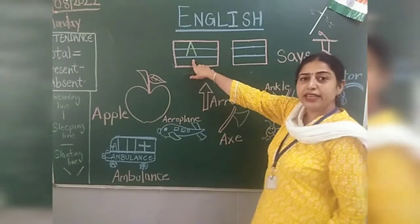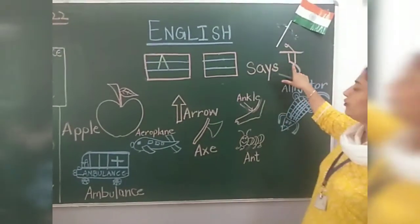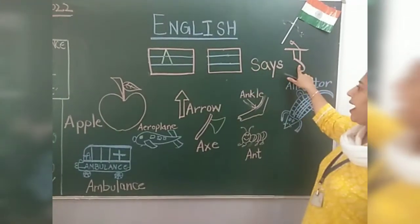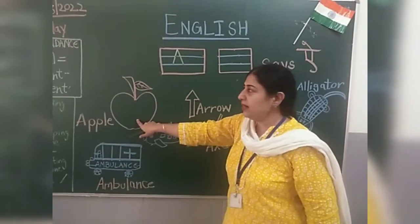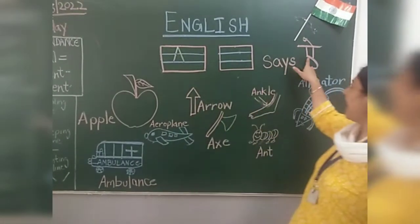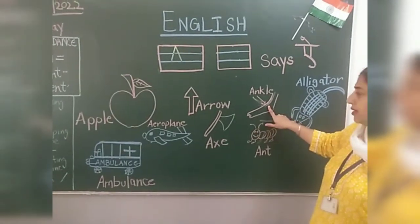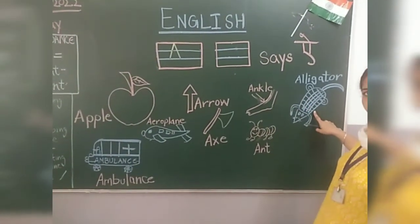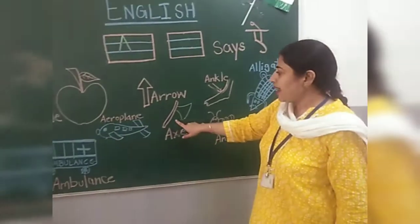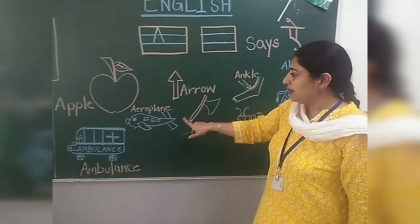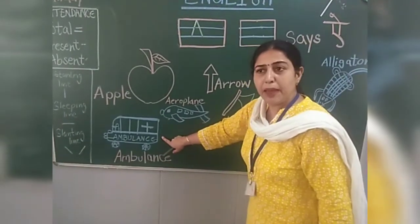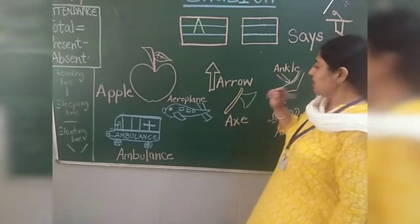What is the phonetic sound of A? The phonetic sound of A is 'A'. A is apple, A is arrow, A is anchor, A is alligator, A is ant, A is axe, A is aeroplane, A is ambulance.